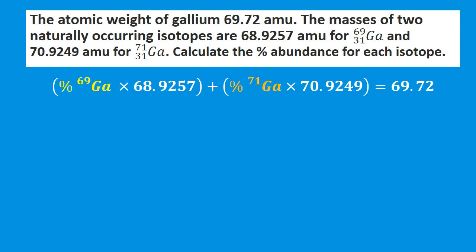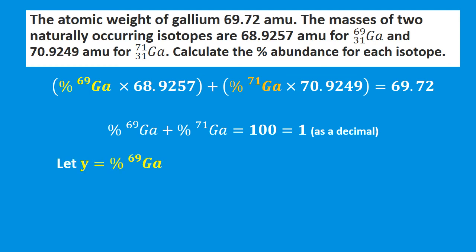We have two unknowns in one equation, so we use the constraint that percent abundances must add to 100 — or as a decimal, equal 1. Let y equal the percent of gallium-69 as a decimal. Then the percent of gallium-71 equals 1 minus y. We substitute these into the original equation: y replaces gallium-69's percent and (1 − y) replaces gallium-71's percent.